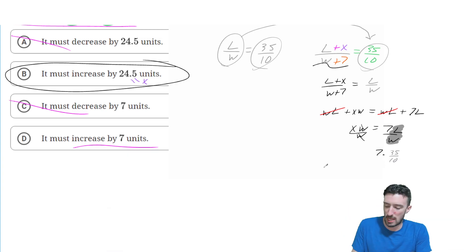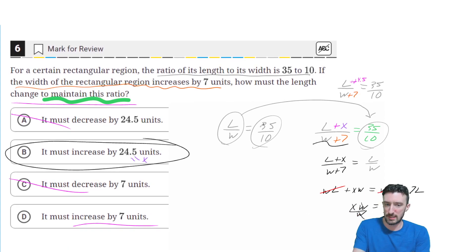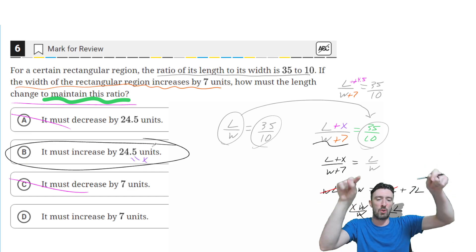All right, so that confirmed it. But again, we were able to use our common sense to say, you know what, if the length is bigger than the width, they're not going to increase by the same amount and maintain their ratio, that's not going to happen. It must be whatever the other number is. All right, I'm done with this one. I'll see you later.